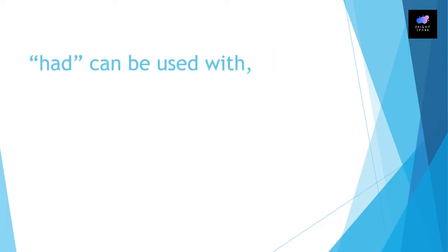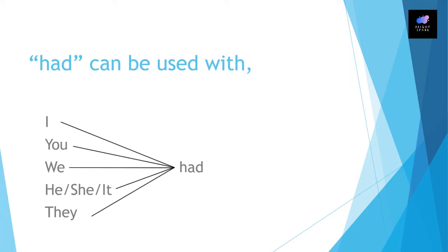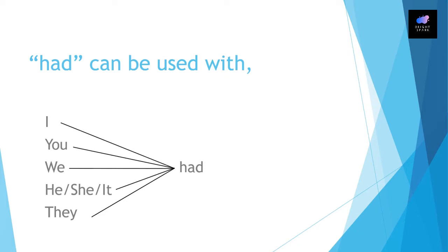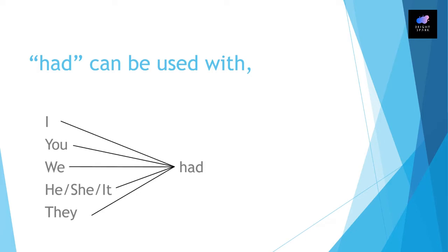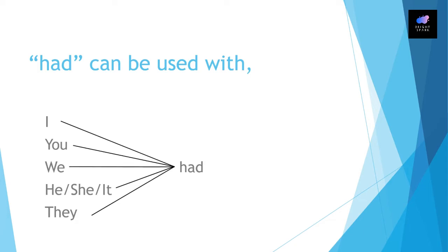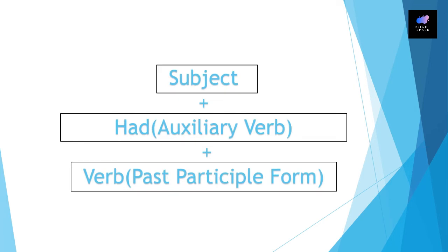We'll see how we can use this auxiliary verb 'had.' Had can be used with subject pronouns. The subject pronouns are: I, you, we, he, she, it, and they. So we use: I had, you had, we had, he had, she had, it had, and they had.